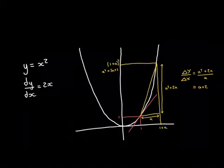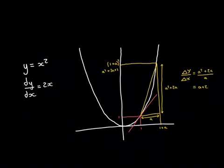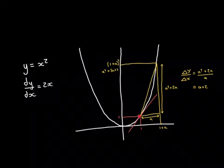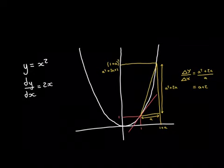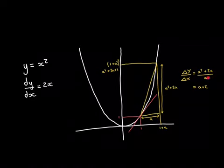Delta x equals a. Delta y equals (1+a)² minus 1. Expanding (1+a)² gives a²+2a+1, then subtracting 1 gives a²+2a. So delta y over delta x is (a²+2a)/a. As long as a is not equal to 0, we can cancel algebraically and simplify this down to a+2.